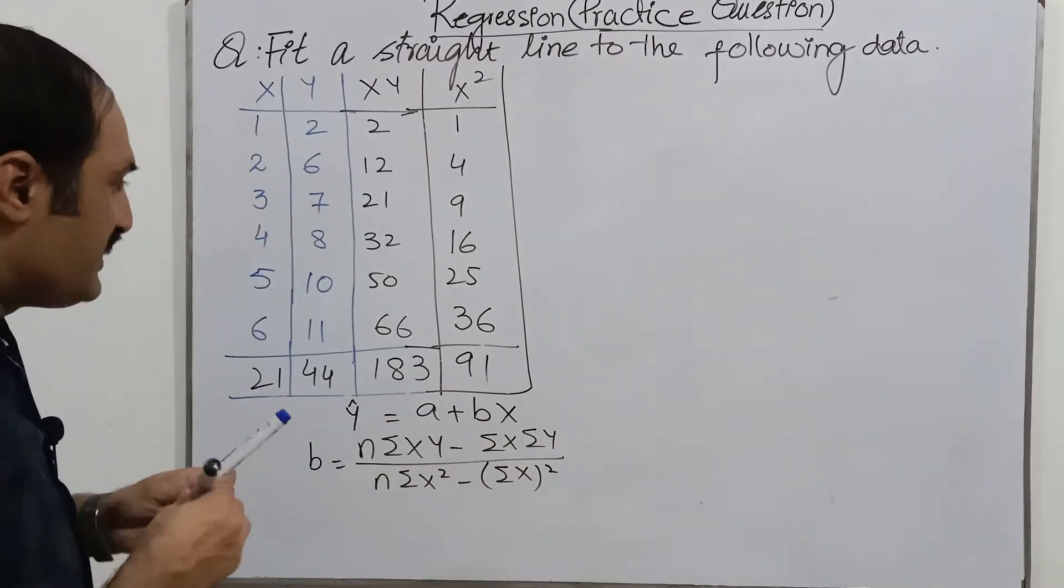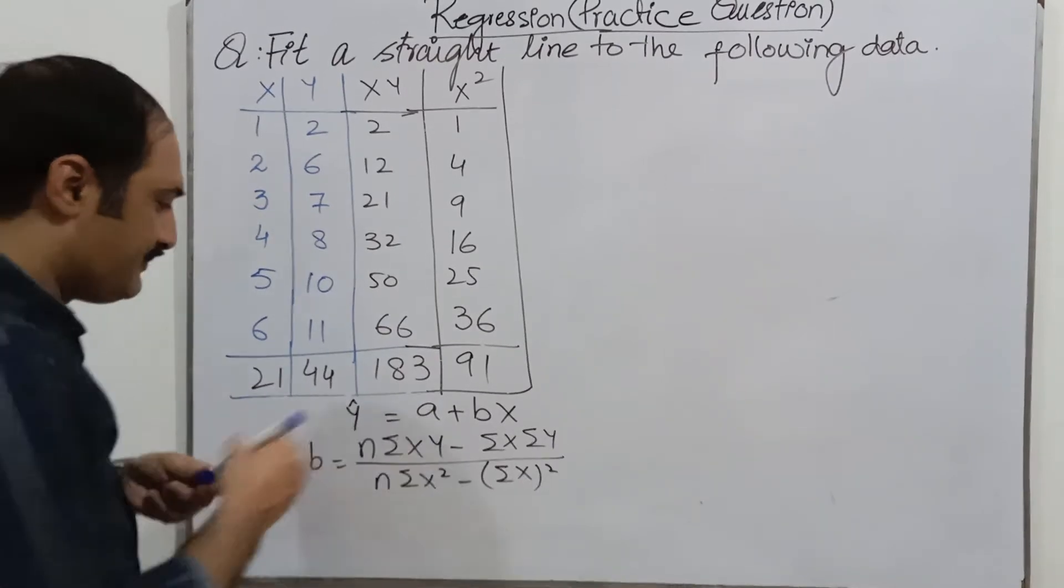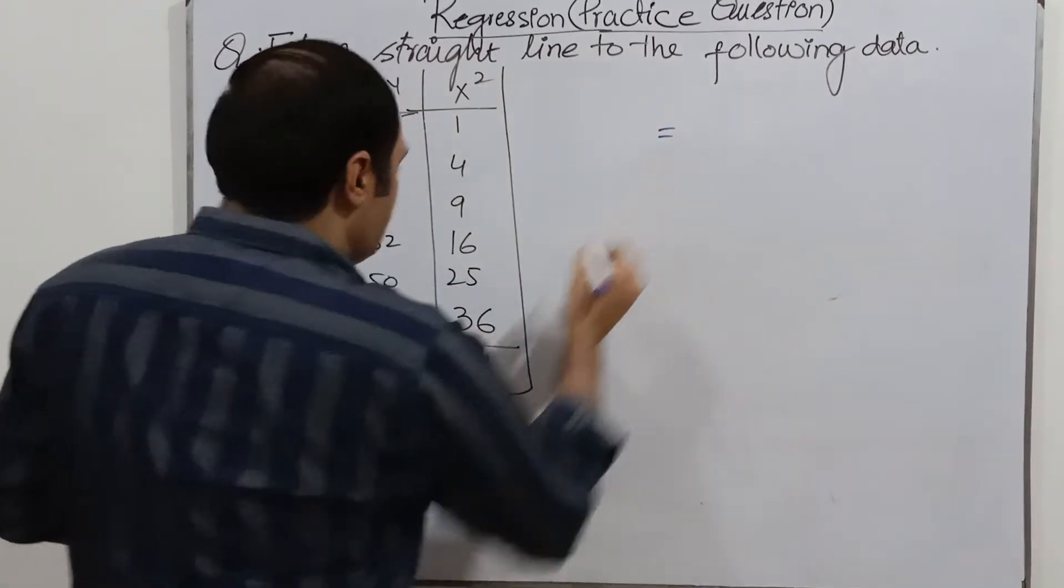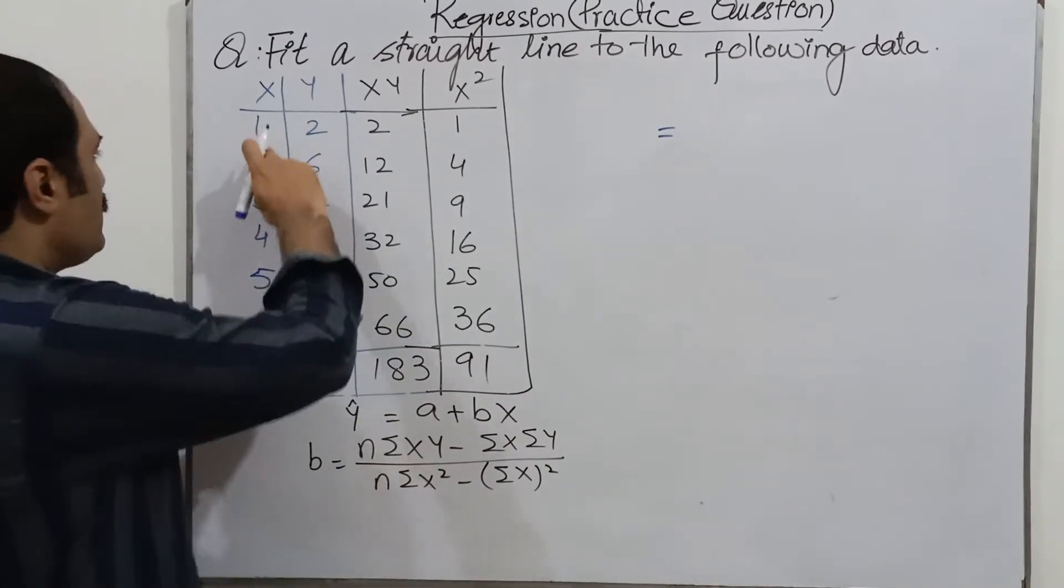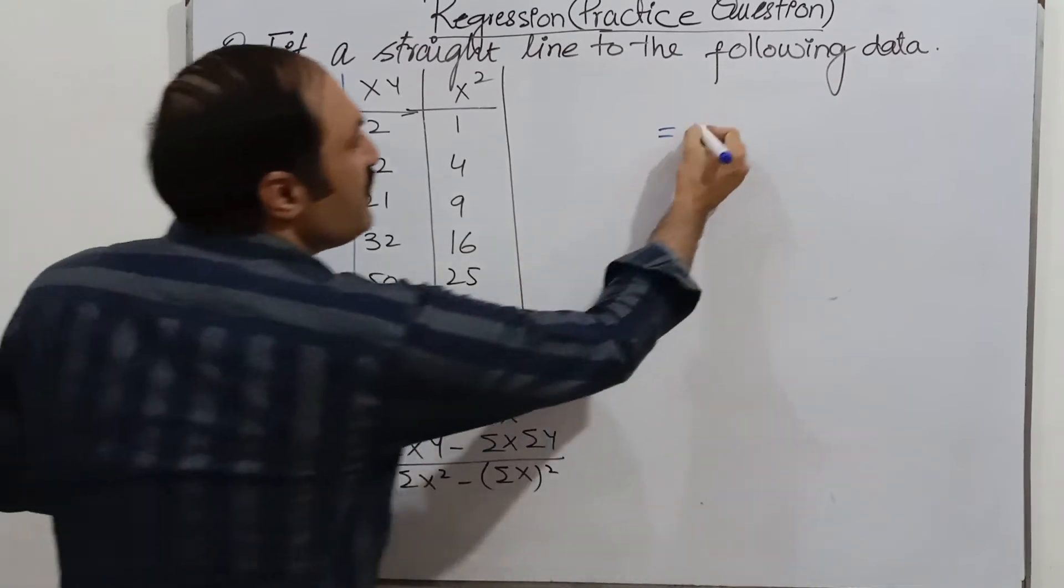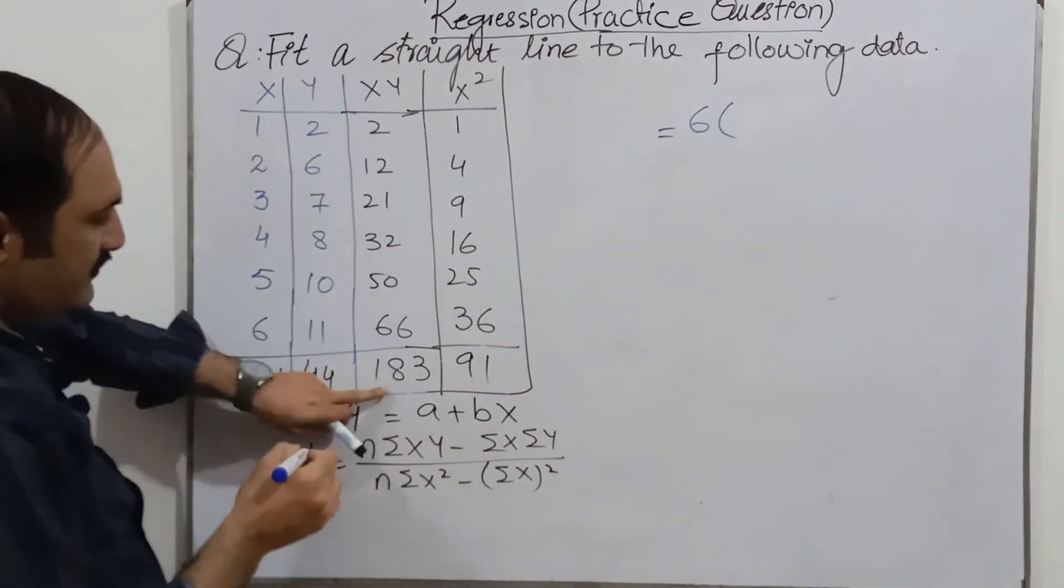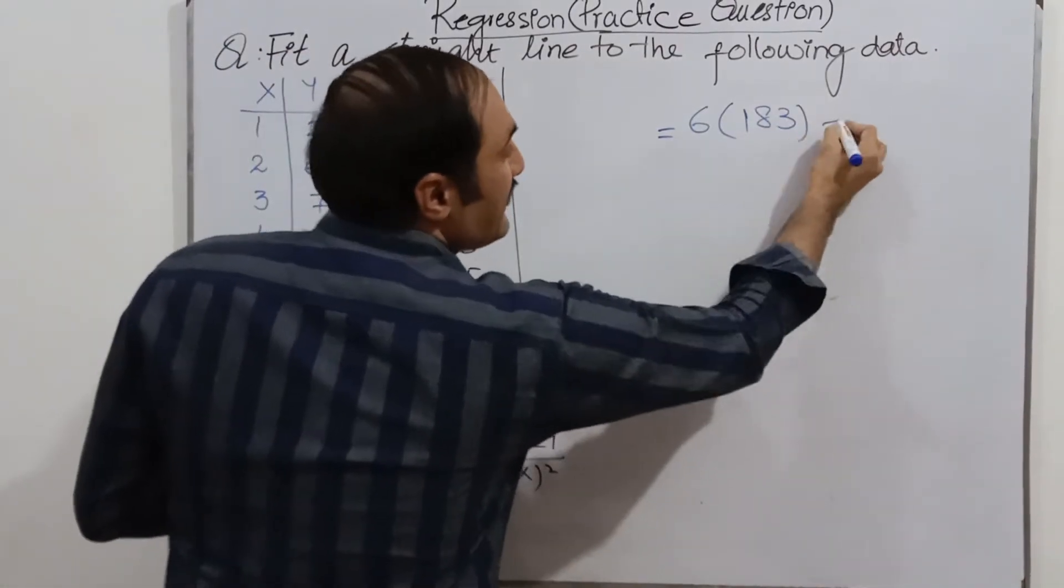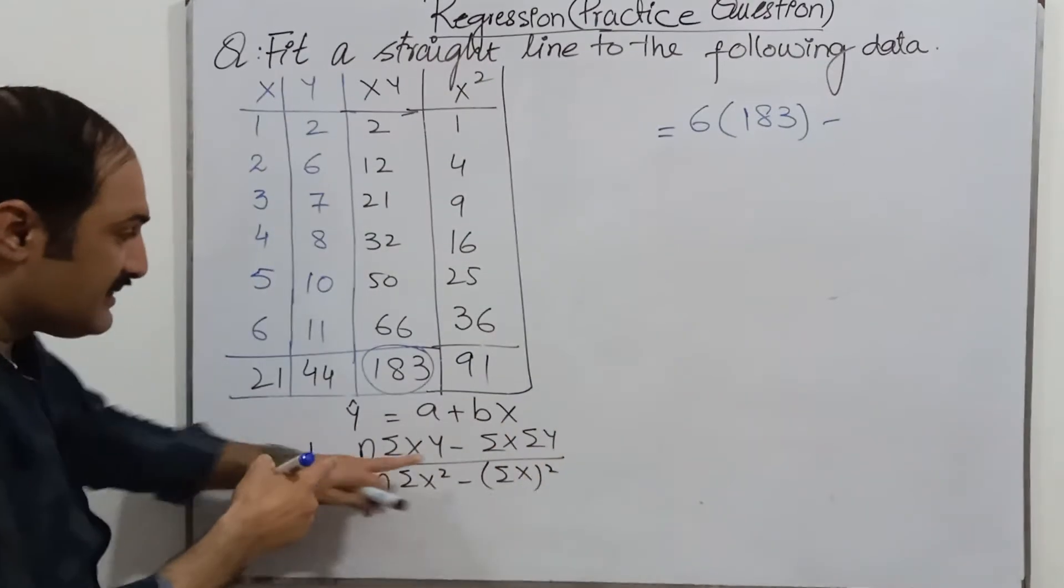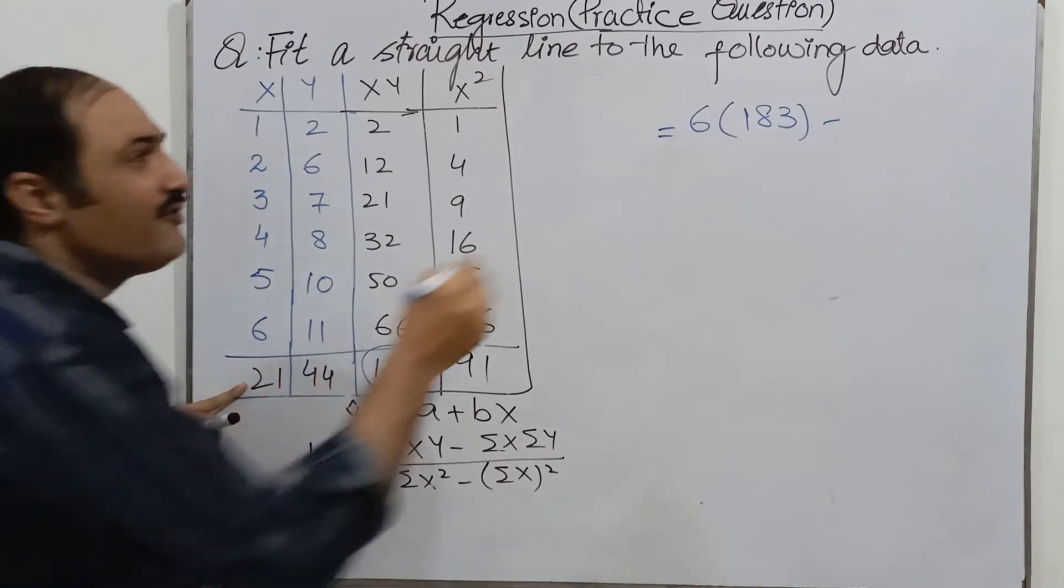Now put these sums in this formula. Here is n is equal, n is total number of observation, one two three four five six. Here is n, instead of n we can write six into summation xy is one eighty three.